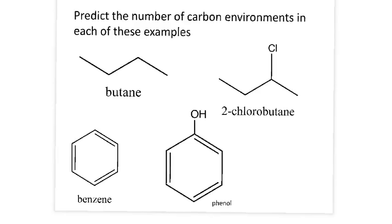So hopefully you've had a go at doing that. If you look at butane as our first example, it's the same as the butene we were looking at before, because these two carbons at either end are exactly the same environment, so you get one peak for that, and these two here, you get one peak. So you get two peaks for butane.